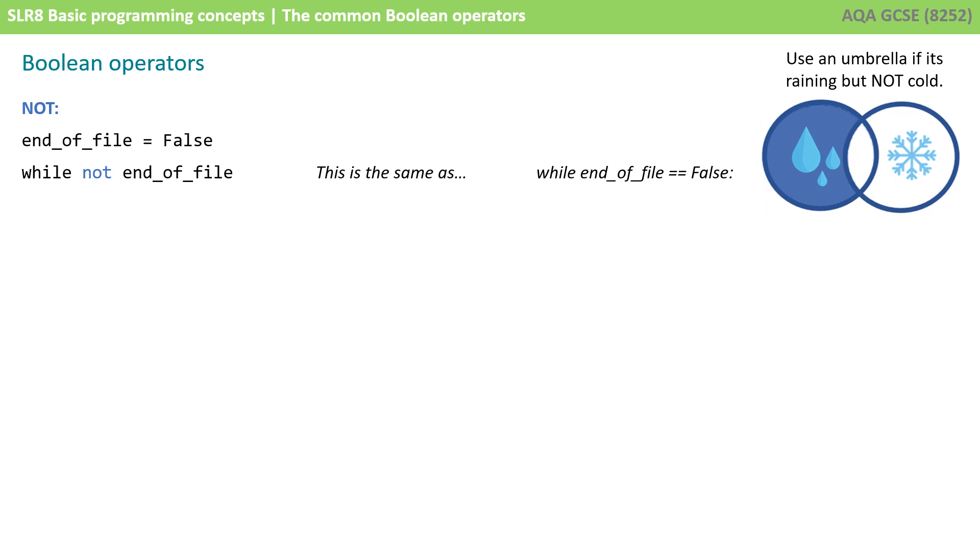A couple of typical ways you could use this: you could say end_of_file equals false, so that's setting a Boolean flag to false, and then you can say while NOT end_of_file, while NOT false, and this is the same as saying while end_of_file equals false.